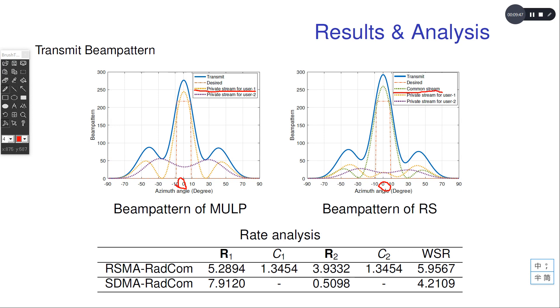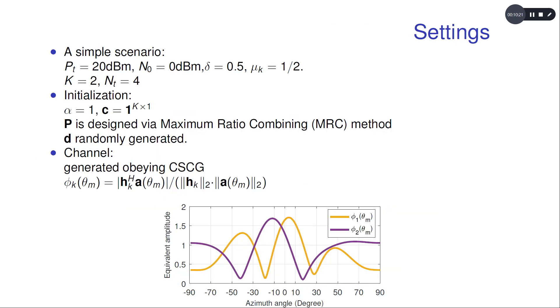This results from the conflict of the radar and communication tasks. We can see SDMA RadCom choose the private stream for user 1 to form a beam at the zero degree. This is because the channel of user 1 is stronger at this place.